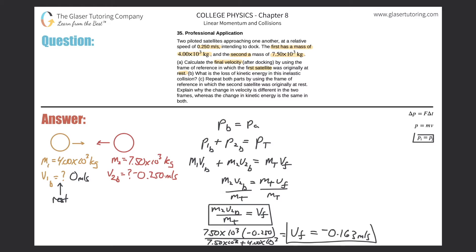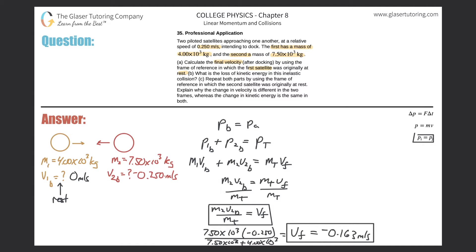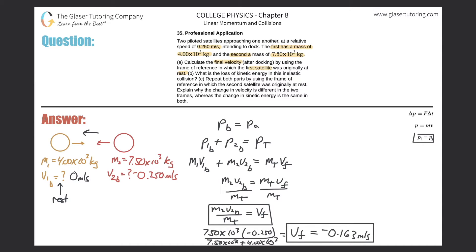The answer is negative because the second satellite is moving to the left and is also more massive than the first satellite. Therefore after the collision the combined system should be traveling to the left - that makes sense. That completes letter A.